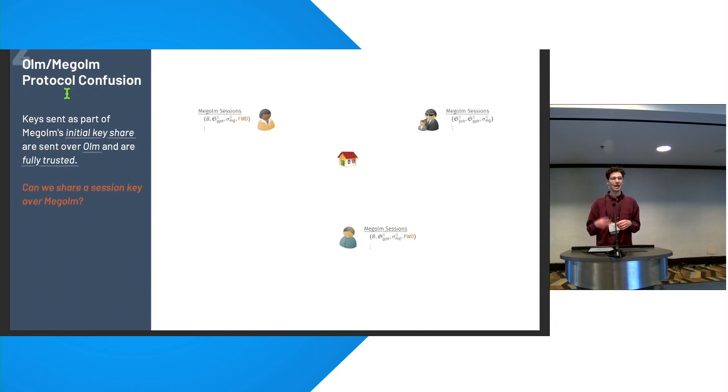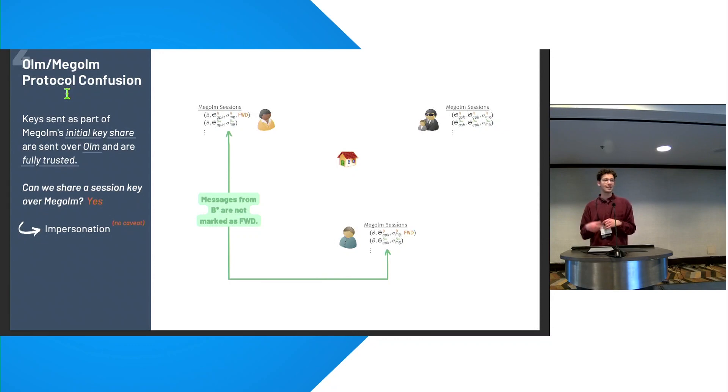So here we have Alice, Claire, and we have Eve impersonating Bob using our previous attack. So this partial impersonation attack. And one thing that's interesting about MegaOhm is that the initial key share, unlike the key request protocol, these key shares are sent over Ohm, and they're fully trusted. They're not counted as a forwarded key. But we only have an impersonation attack that breaks at the MegaOhm level, not the Ohm level. So in this attack, we craft a special ciphertext that confuses the client into thinking it's an Ohm message. And in particular, we construct a new session called B-Star that we do an initial key share on and encrypt using our previous impersonation attack. And the other devices, Alice and Claire, will decrypt it and start to associate messages sent using that session as if they came from Bob but not marked as forwarded. So this gives us a full impersonation without any caveats.